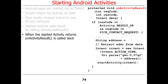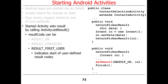A student asks why result codes are numbers rather than strings. The answer is that integers take less space — 4 or 8 bytes — and keeps things concise. Using strings might tempt people to make them very long. Another student asks why use setResult instead of a method that returns an intent directly. The activity is off doing its own thing, and when it's about to finish, the programmer sets the result value and gives an intent, which is stored internally in Android and then passed back.